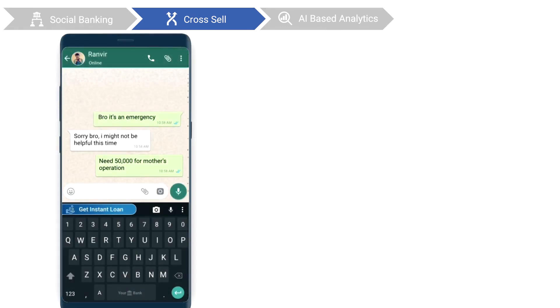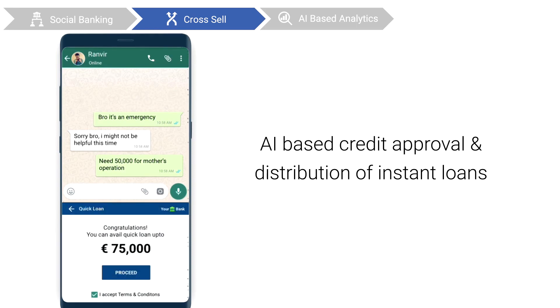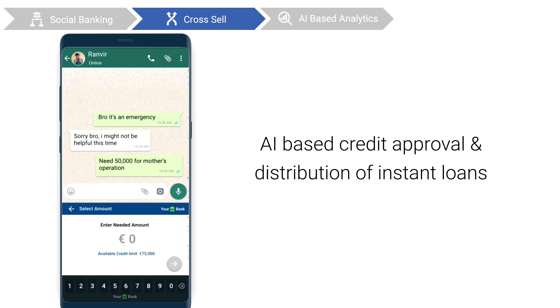Distribution of instant loans was never easier. Your keyboard with Bobble AI detects credit intents and loan requirements at the earliest, and prompts users at the right time.